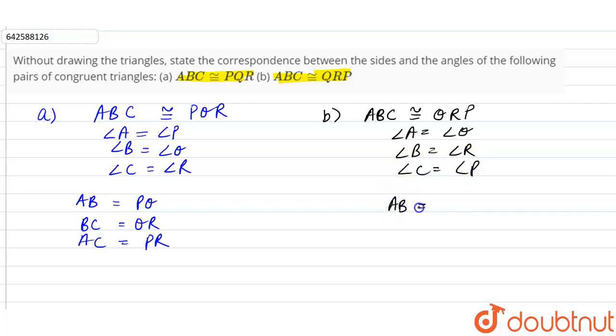If we talk about the sides, so AB is equal to QR, BC is equal to RP, and AC is equal to QP.